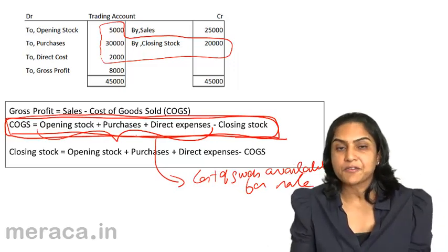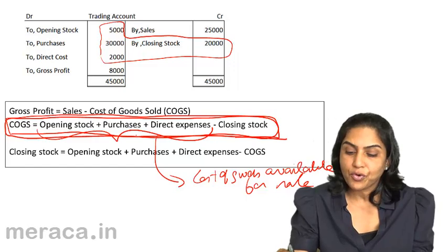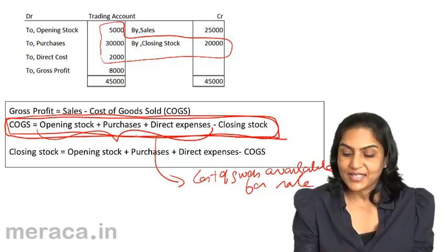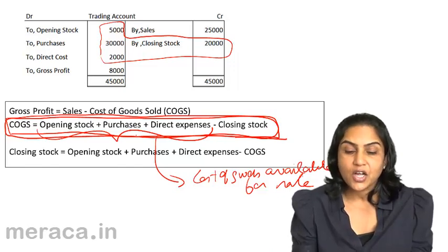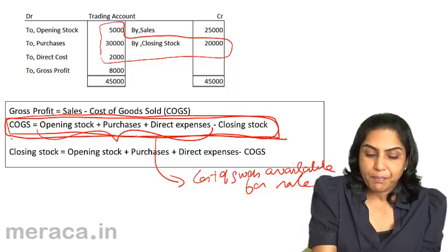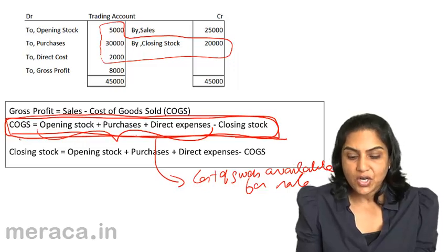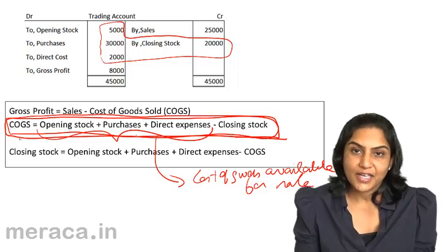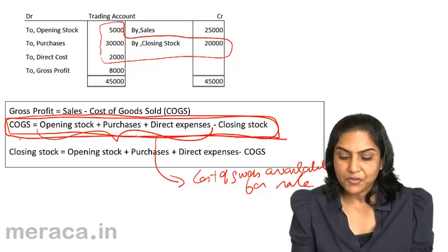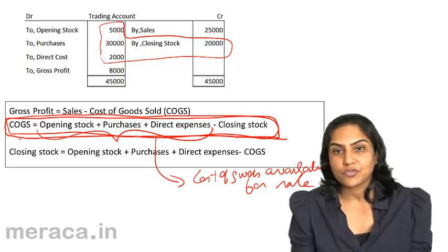These goods were available for sale, but we were not able to sell all of them, and therefore we have a closing stock. Cost of goods available for sale less closing stock gives us the cost of goods sold. To repeat: cost of goods sold equals opening stock plus purchases plus direct expenses minus closing stock — cost of goods available for sale minus closing stock equals cost of goods sold.